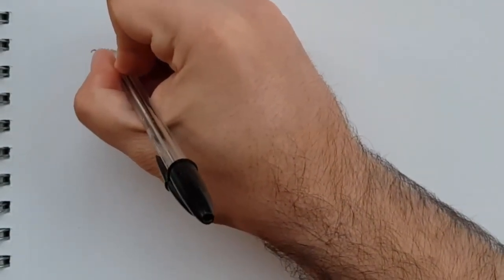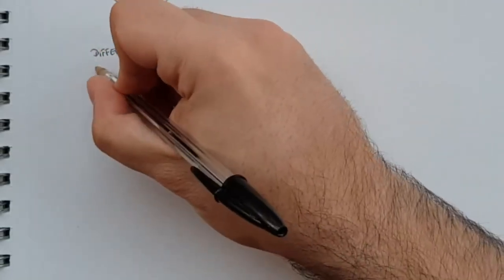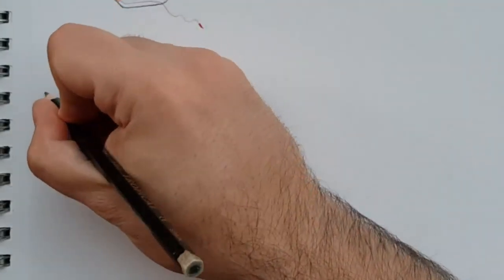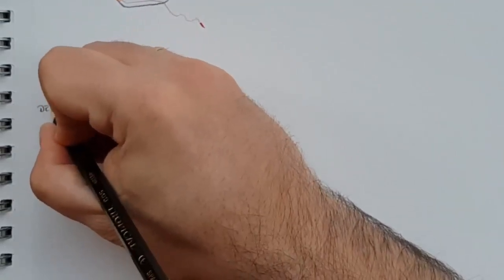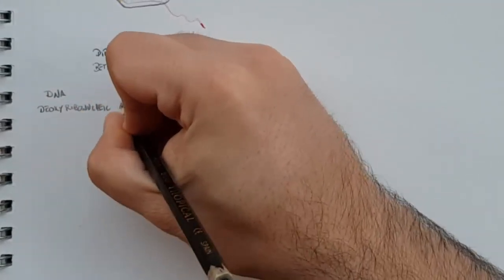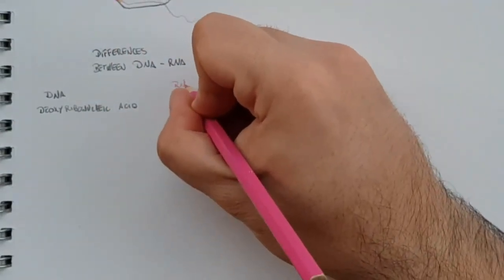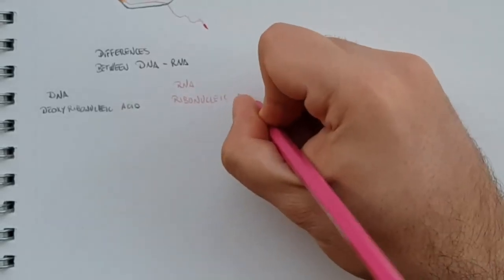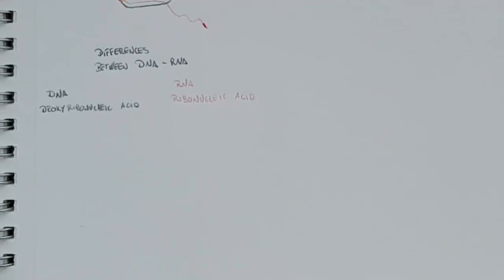Now let's talk about the differences between DNA and RNA. DNA is painted in black and RNA in pink. The first difference is the name: DNA stands for deoxyribonucleic acid, while RNA is ribonucleic acid. The difference is in the 'deoxy' part.